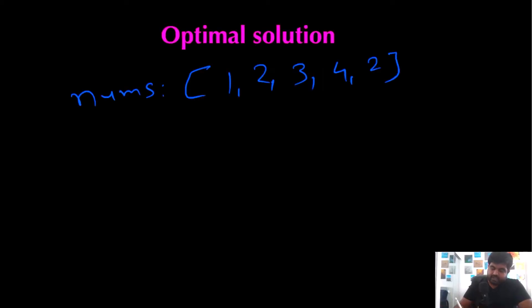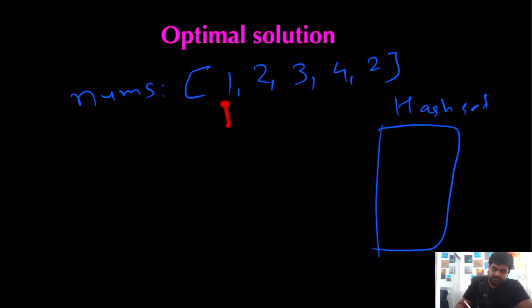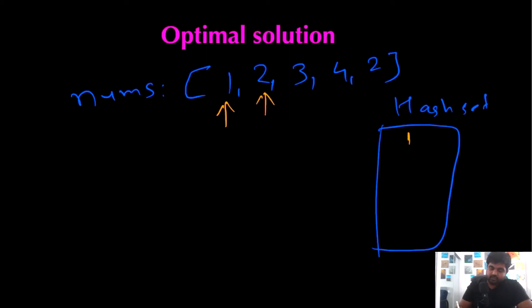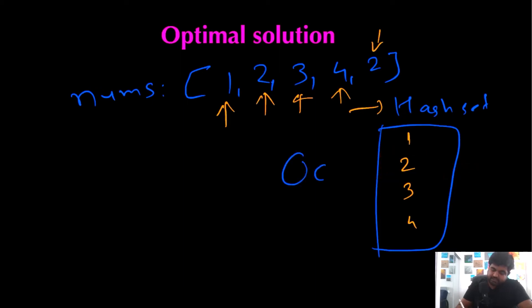For the optimal solution, we are going to use an additional data structure — a hash set. The idea is that for each value we iterate over, we check if it is already present inside the hash set. If it is present, we return true immediately. If it is not present, we add that entry to the hash set and move to the next element. For example: 1 is not in the hash set, so we add it. 2 is not present, so we add it. 3 and 4 are also not present, so we add them. When we reach value 2 again, we immediately find it in the hash set — and this lookup takes O(1) constant time, making it very efficient.